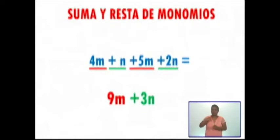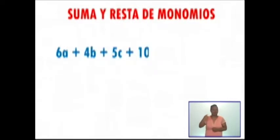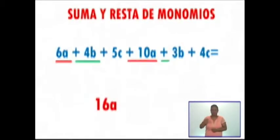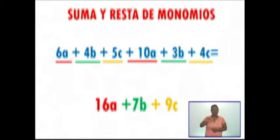¿Ya te diste cuenta? Sumé los términos semejantes. ¡Facilísimo, verdad! Vamos a ver otro ejemplo. Aquí tengo 6a más 4b más 5c más 10a más 3b más 4c. Voy a sumar los términos semejantes en orden alfabético. 6a más 10a son 16a; 4b más 3b son 7b; y 5c más 4c son 9c. Por lo tanto, nuestro resultado final es 16a más 7b más 9c. ¡Facilísimo, verdad!